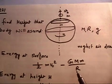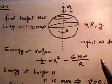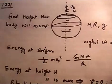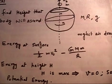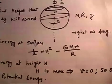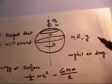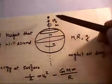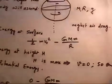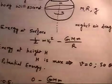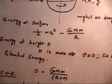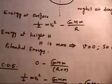Let the maximum height attained be capital H. At maximum height, dH/dt = 0, meaning the velocity is zero at that point. So at height H, there is no kinetic energy — only potential energy remains.